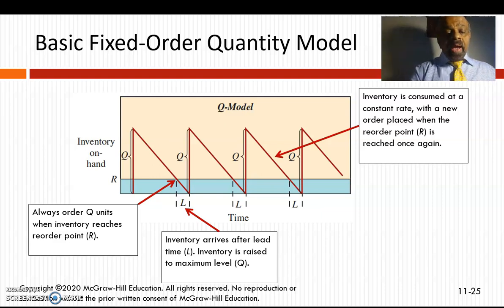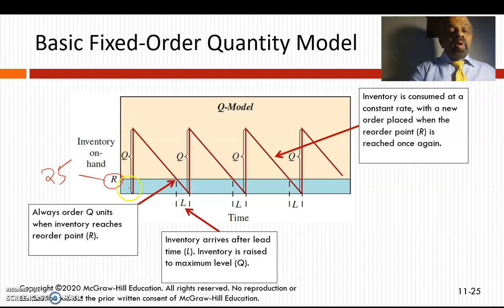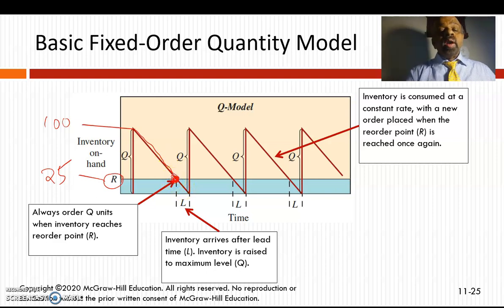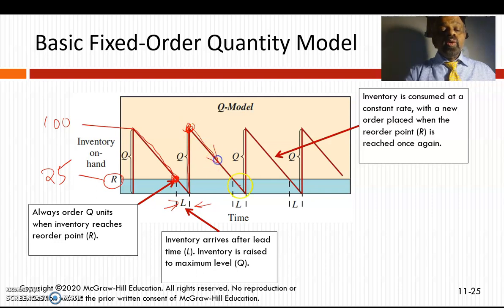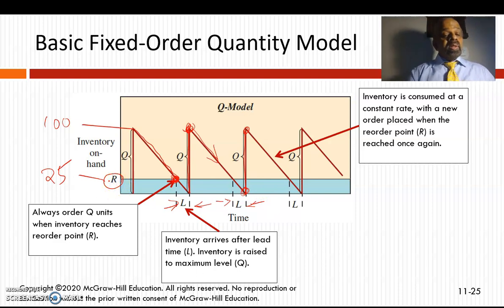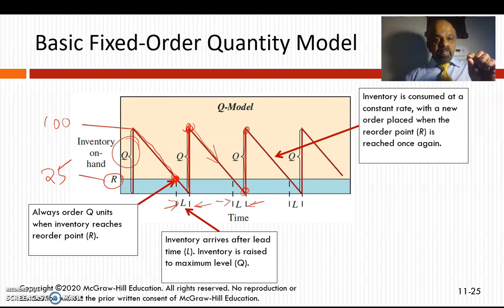Let's say the reorder point is at 25 units. We order 100 units. As we consume inventory, it goes down; when it reaches 25 we place an order because we have lead time to account for — the lead time gives us consumption over that period too. Then we receive and consume another 100 units, order another 100, and so on. That is the basic fixed order quantity model.